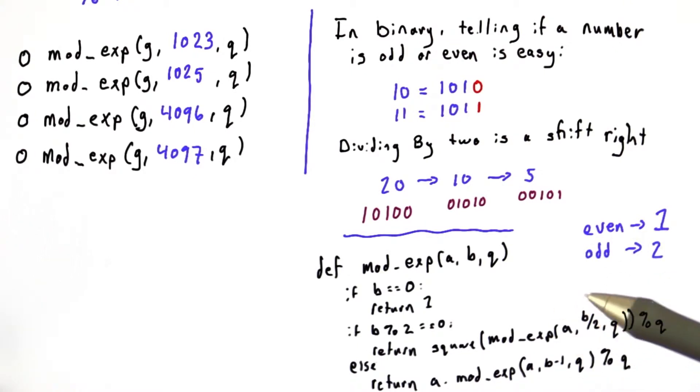From this, we can easily see that for every 1 in the exponent, when written in binary, we do 2 multiplications. And for every 0, we only do 1 multiplication.